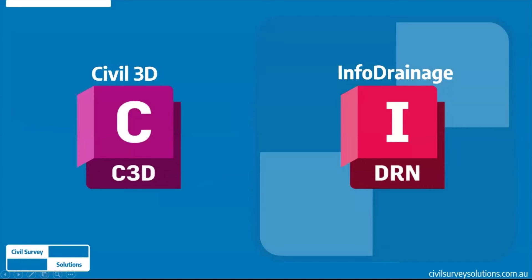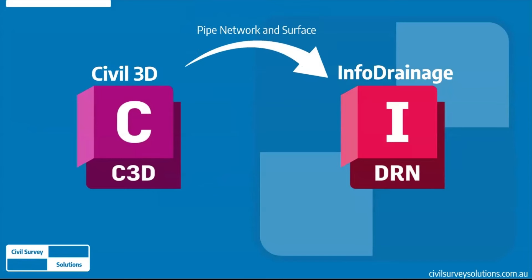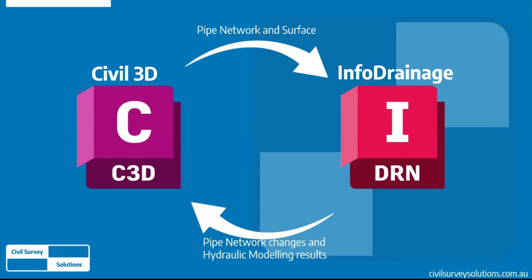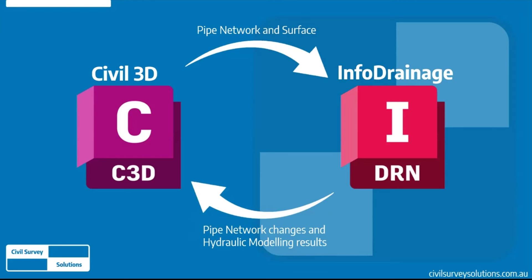Thank you, Ben. Today we're looking at Civil 3D and InfoDrainage — two products that work great together to streamline drainage design. We'll start in Civil 3D and transfer data over to InfoDrainage, including the pipe network and the Civil 3D surface. In InfoDrainage, we'll create more pipes, set up rainfall, run analyses, and finalize the design. We'll then take the design back to Civil 3D, updating the pipe network and bringing over the hydraulic modeling results.